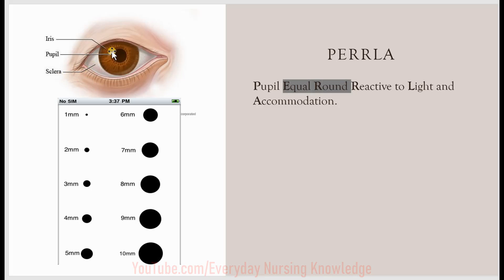Here is an image of an eye. The white portion is called sclera, the colored round portion is called iris, and at the center of the iris the round portion is called pupil. In PERLA, you are assessing the pupils of the eye.